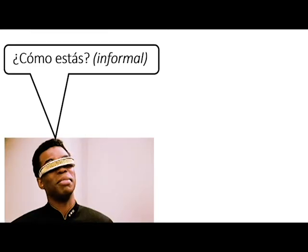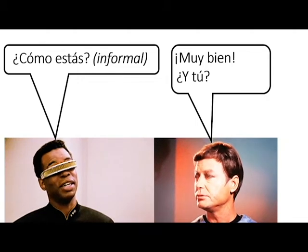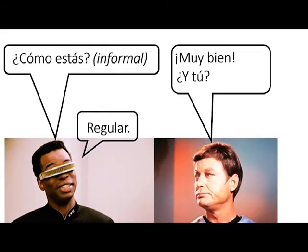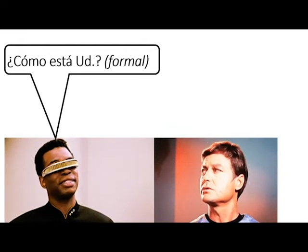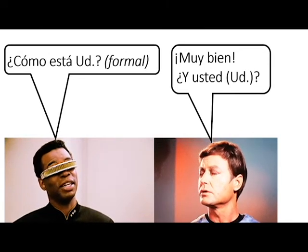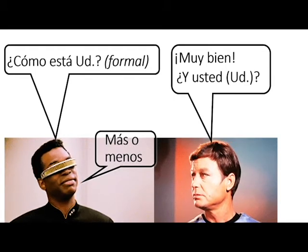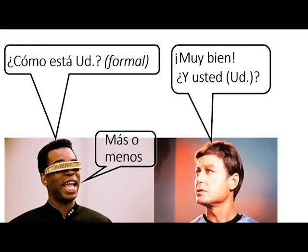Here's Jordi saying cómo estás — that's the informal way of saying how are you. Skip a line and leave some space to write the formal version in just a moment. Someone could respond muy bien, which means very well or very good, and then ask back y tú, which means and you — again, the informal way. He could respond regular, which means regular or all right. But maybe Jordi uses the formal way and says cómo está usted — that means how are you, formal version. And Bones might respond muy bien, y usted — very good, and you, the formal version. Maybe Jordi responds más o menos — more or less. Pause and add those to your notes.